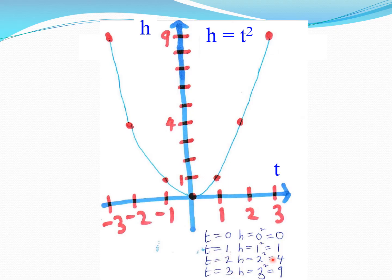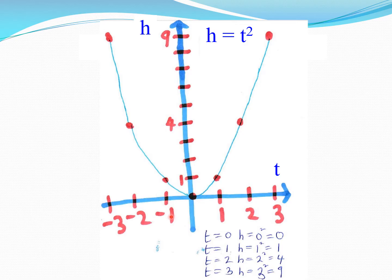Continuing: t equals two gives h equals four; t equals three gives h equals nine, so the point is three, nine. Likewise for negative values — the parabola is a symmetric shape about the y-axis, or in this case the h-axis, because negative values squared give you the corresponding positive result. So the h value at t=1 equals the h value at t=−1, and similarly for two and minus two, three and minus three.